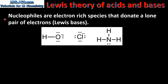Finally, we look at nucleophiles and electrophiles. Nucleophiles are electron rich species that donate a lone pair of electrons. They are Lewis bases. Examples of nucleophiles include the hydroxide ion, the chloride ion, and ammonia.